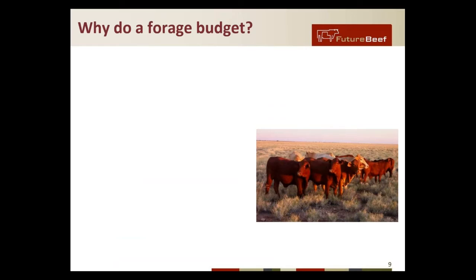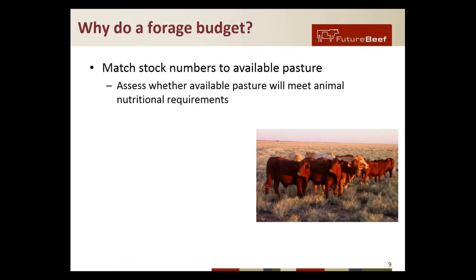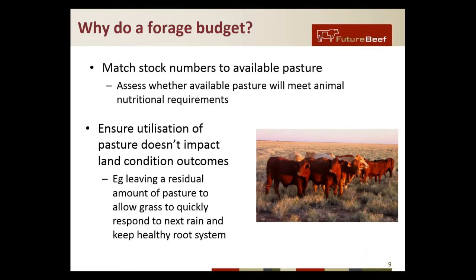To recap, why would we do a forage budget? Basically to match the stock numbers to available pasture, to assess whether that pasture will meet our animal requirements, and then ensure that the utilization of the pasture won't impact land condition outcomes — ensuring that we're leaving enough pasture there to allow the grass to respond to that next rain, keep a healthy root system and grow a good bulk of feed.